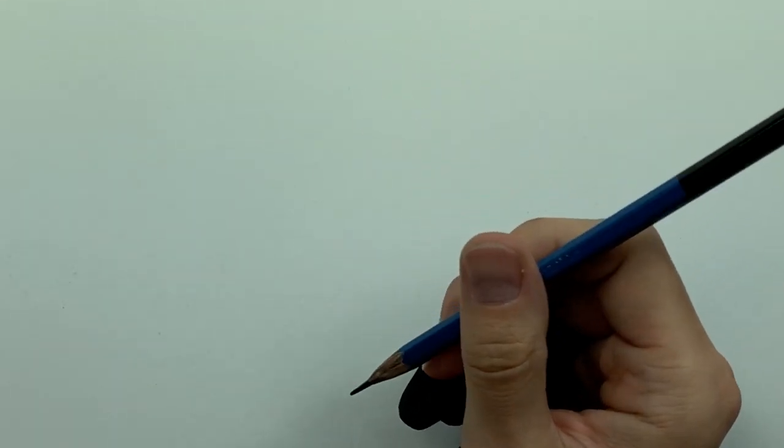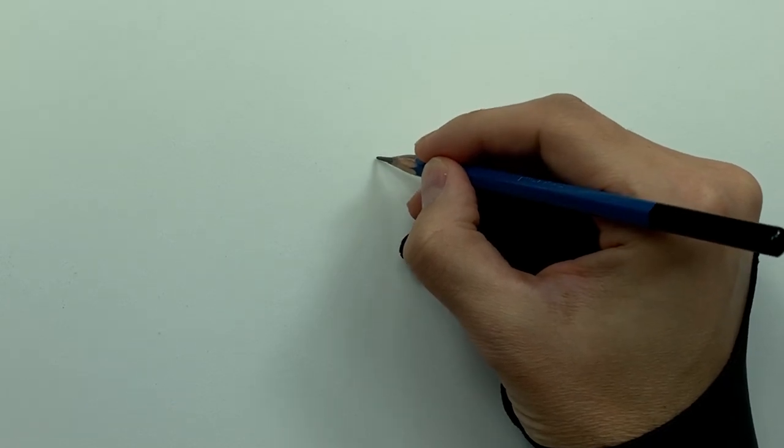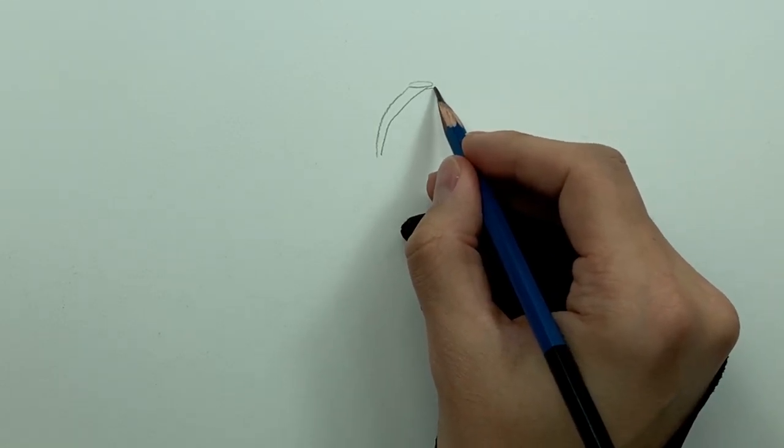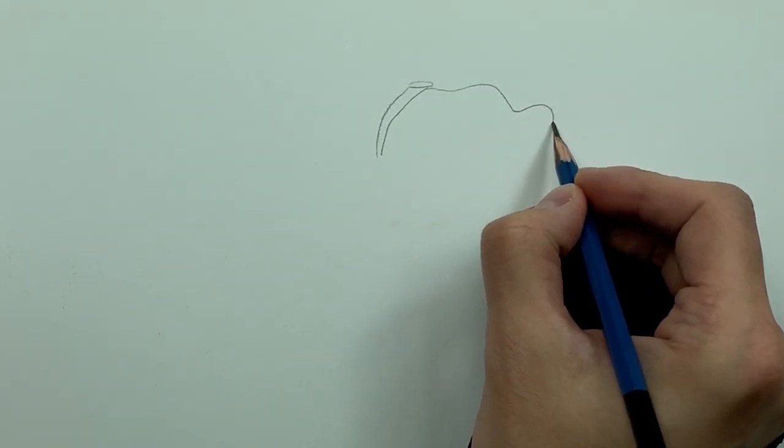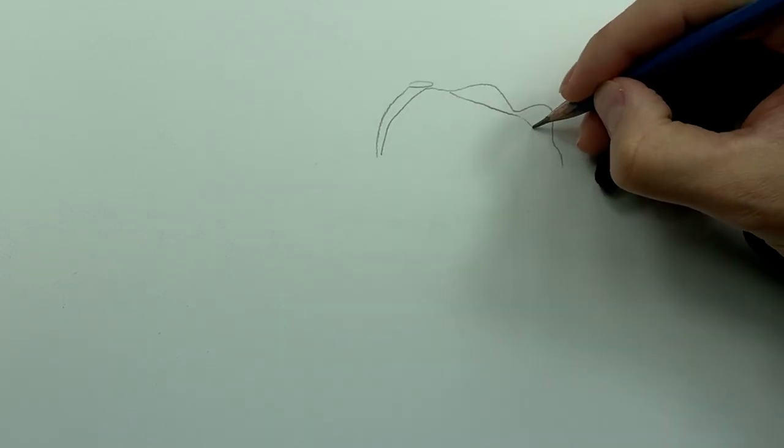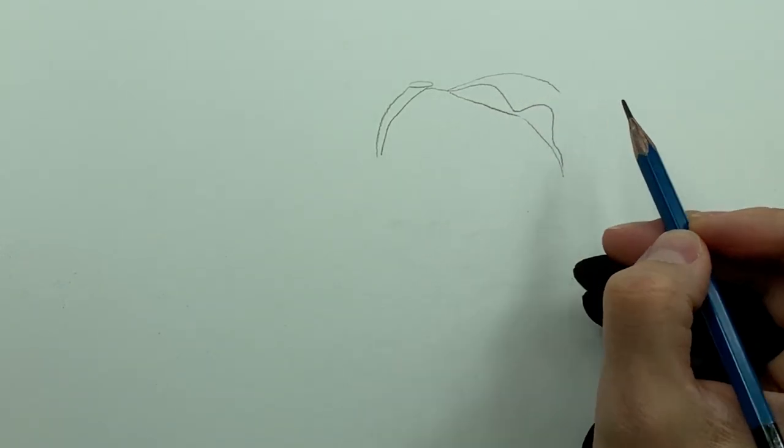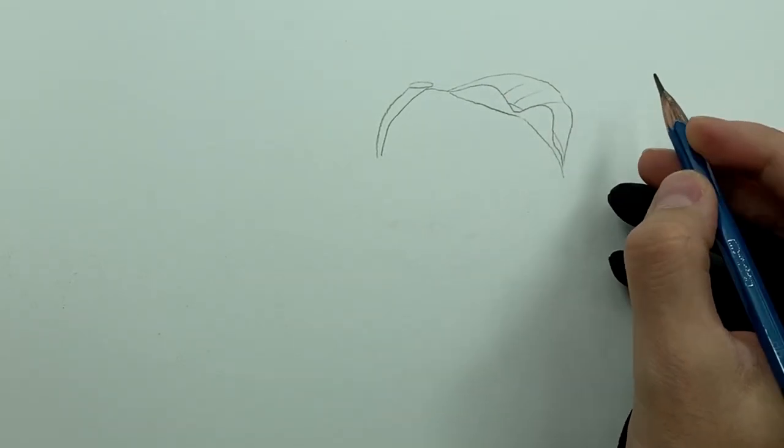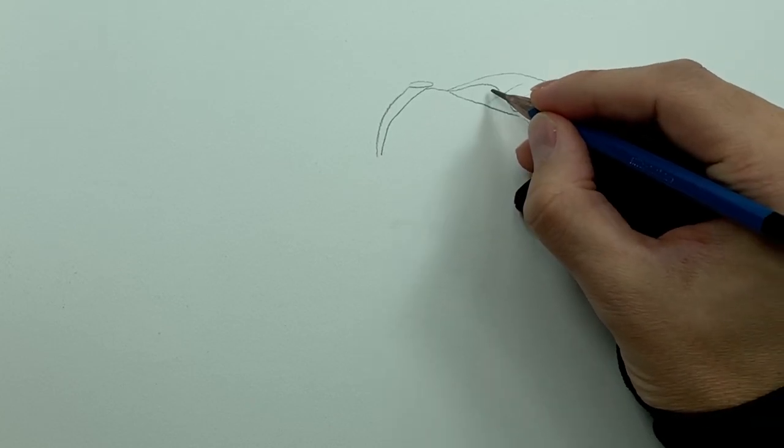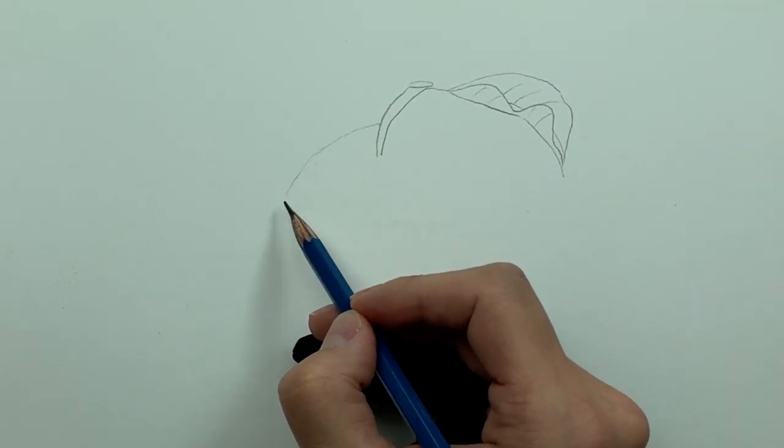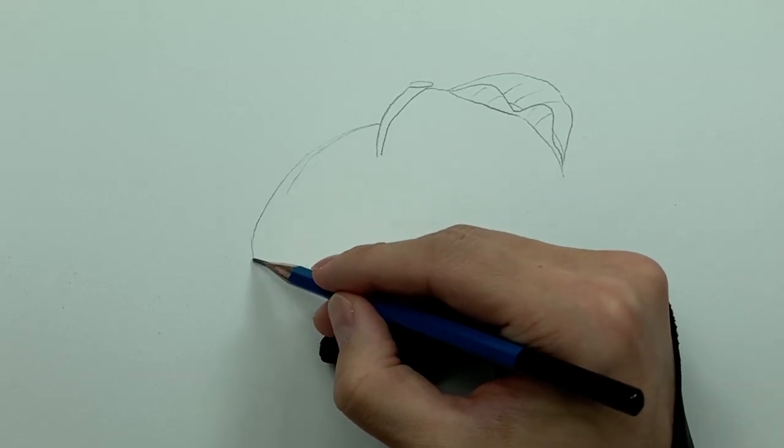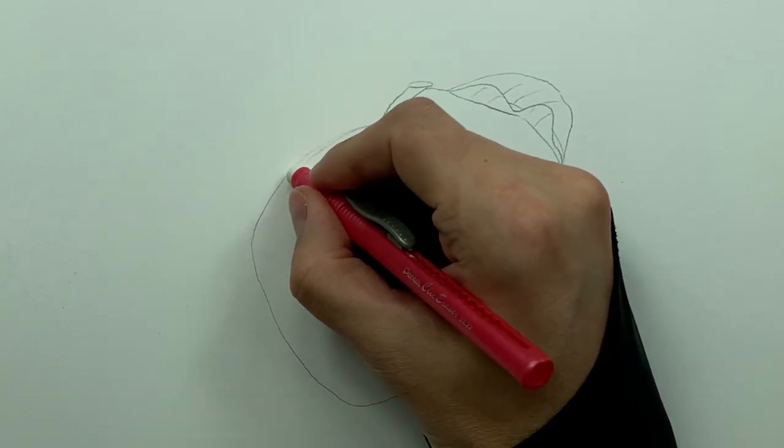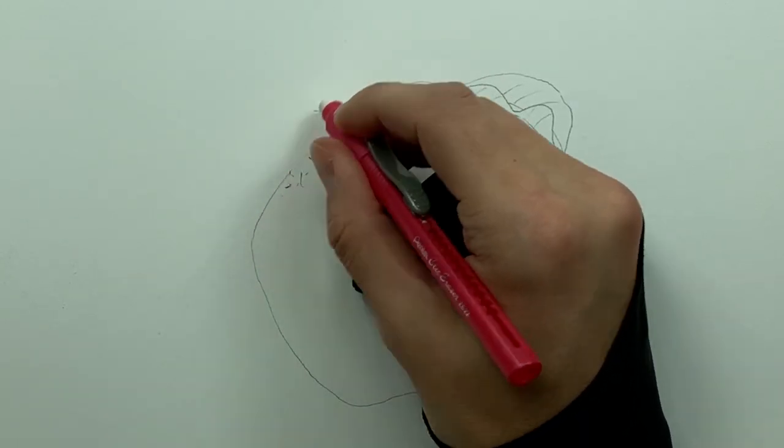Okay, so to start I'm going to be drawing the basic outline of an apple, and the line that we're using here is our contour line. The contour line, as I said in the lesson, is used to define the edge and form of an object.